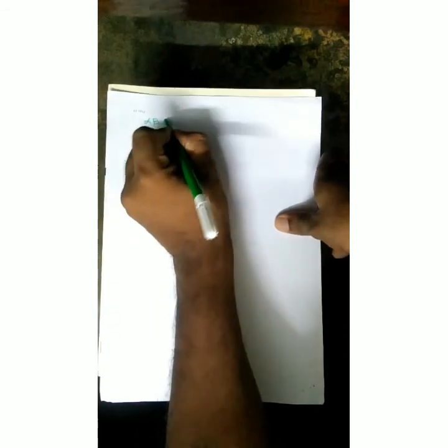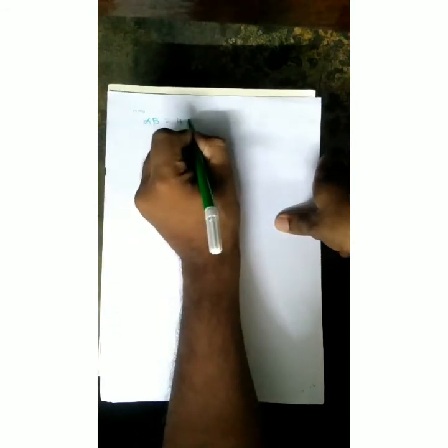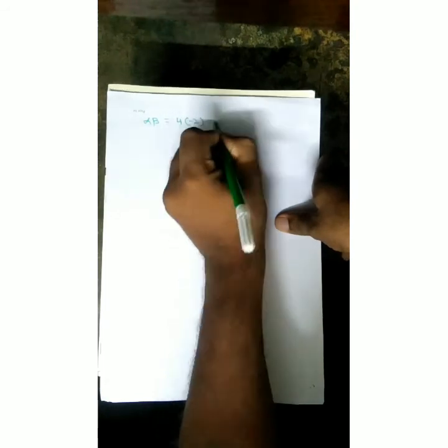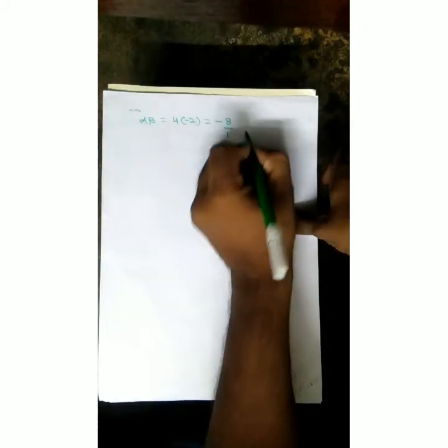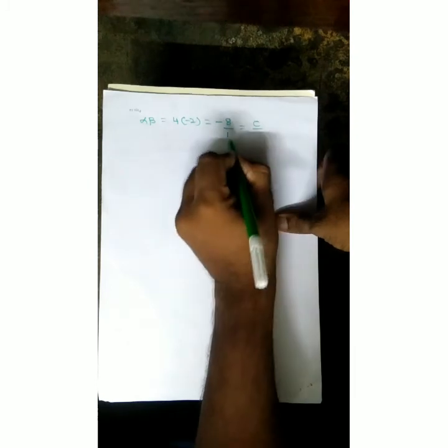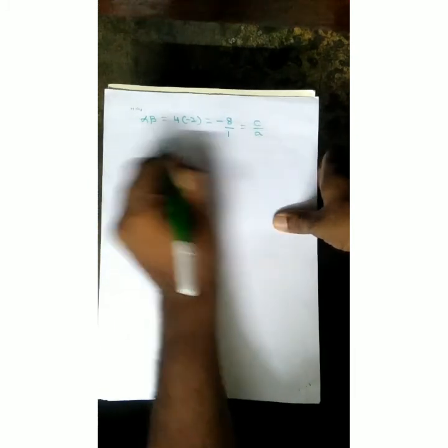Next, the product of zeros. Alpha into beta: alpha value is 4, 4 into minus 2. Plus into minus is minus. 4 times 2 is 8, so minus 8. This is minus 8 by 1. Minus 8 by 1 is c by a, where c is minus 8 and a is 1. Alpha into beta equals c by a. So alpha plus beta is minus b by a, and alpha into beta is c by a. Sum and product of zeros verified. Thank you.